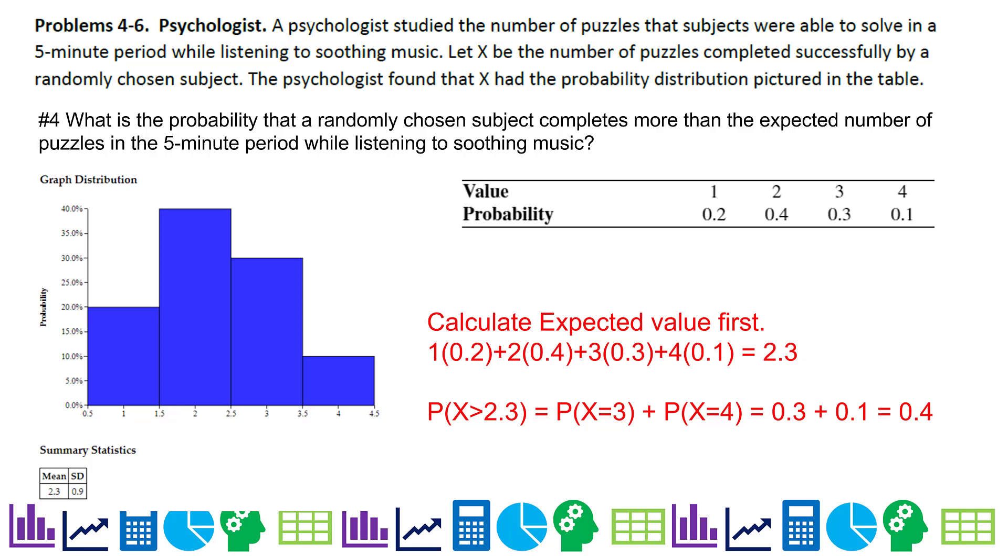A psychologist studied the number of puzzles that subjects were able to solve in a five-minute period while listening to soothing music. Let X be the number of puzzles completed successfully by a randomly chosen subject. The psychologist found that X had the probability distribution pictured in this table. What is the probability that a randomly chosen subject completes more than the expected number of puzzles in the five-minute period while listening to music?